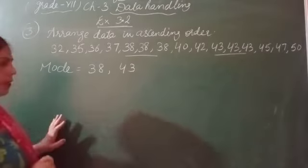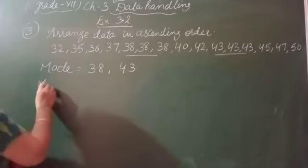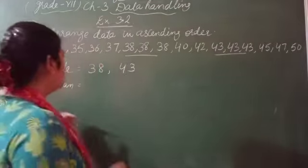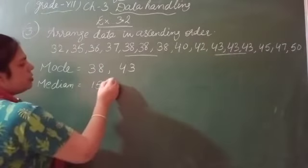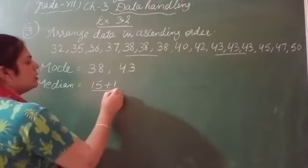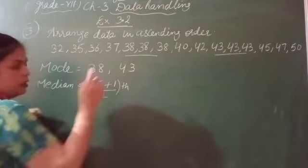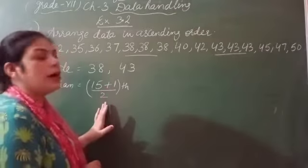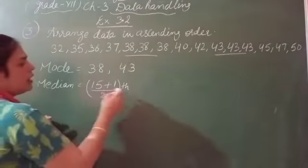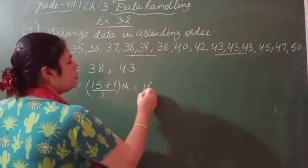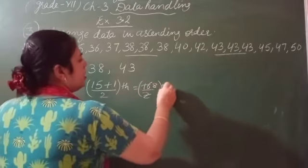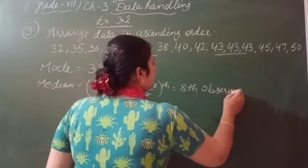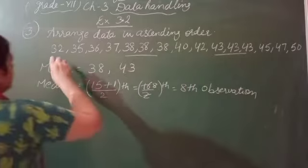Next, you have to calculate median. How many observations are there? 15 students' weights are given. What is the median? For odd numbers, the median is the mid value. The formula is (n+1)/2, which gives us (15+1)/2 equals 8.